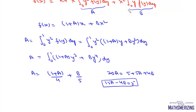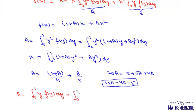Now we write the equation for b. Here b is the integral from 0 to 1 of y·f(y) dy. Substituting f(y) = 1 + ay + by², and multiplying by y, we get the integral from 0 to 1 of (y + ay² + by³) dy.